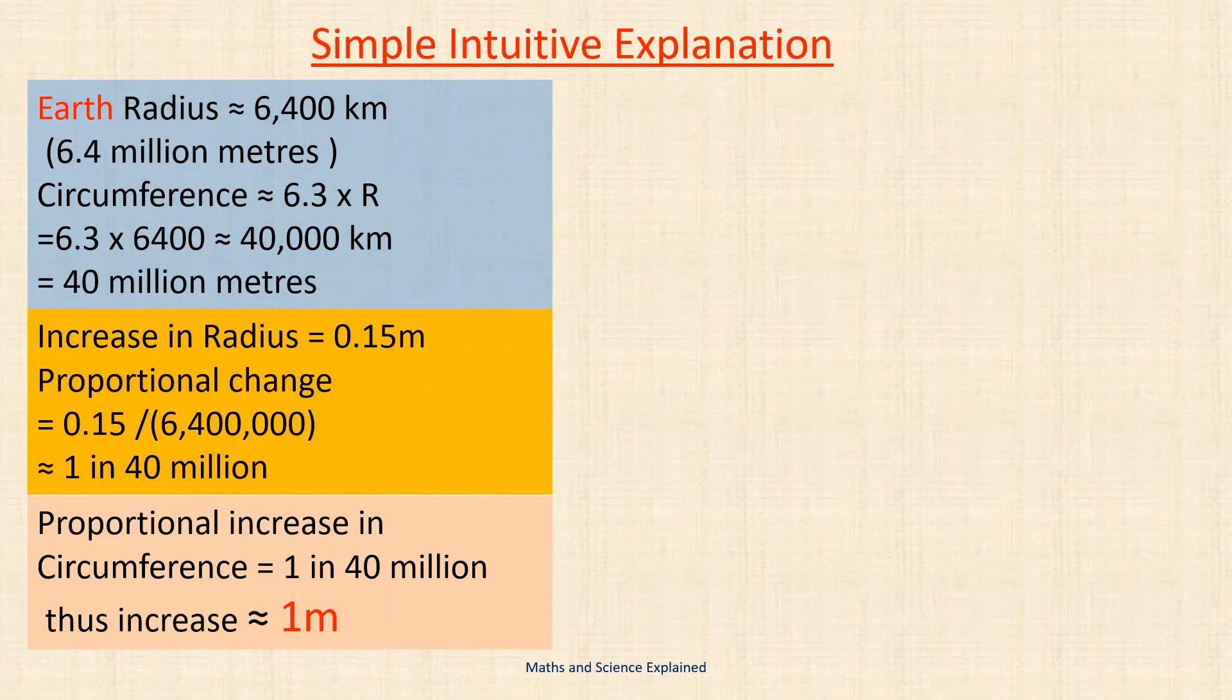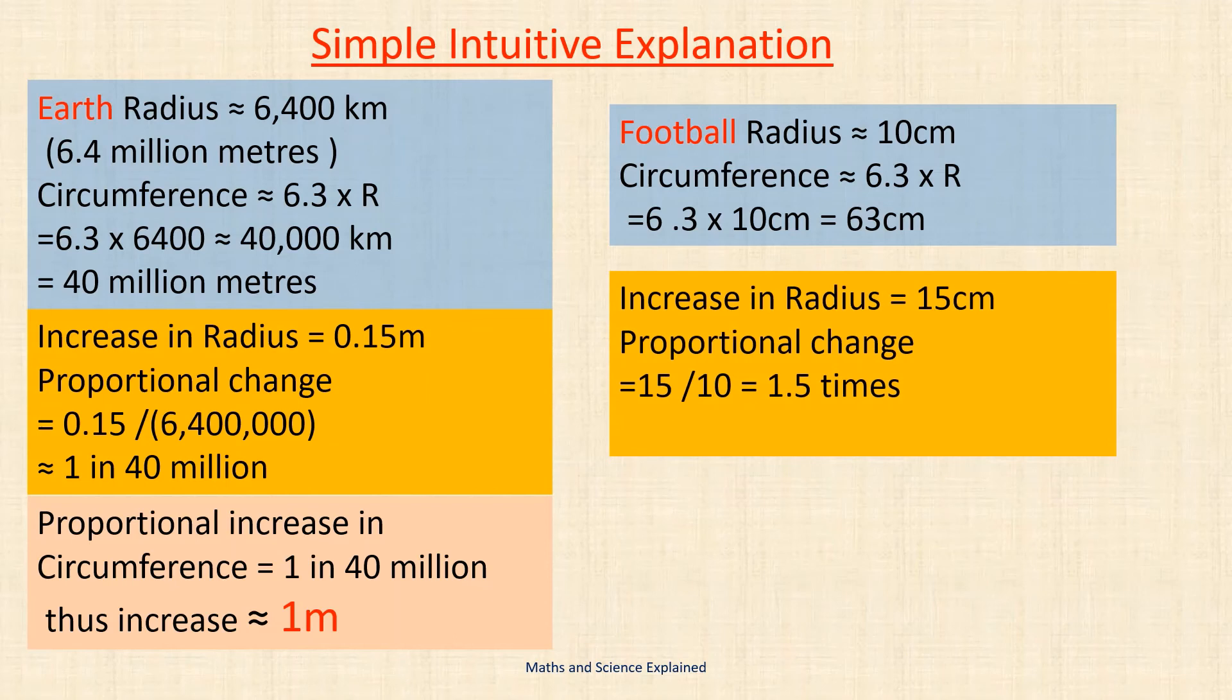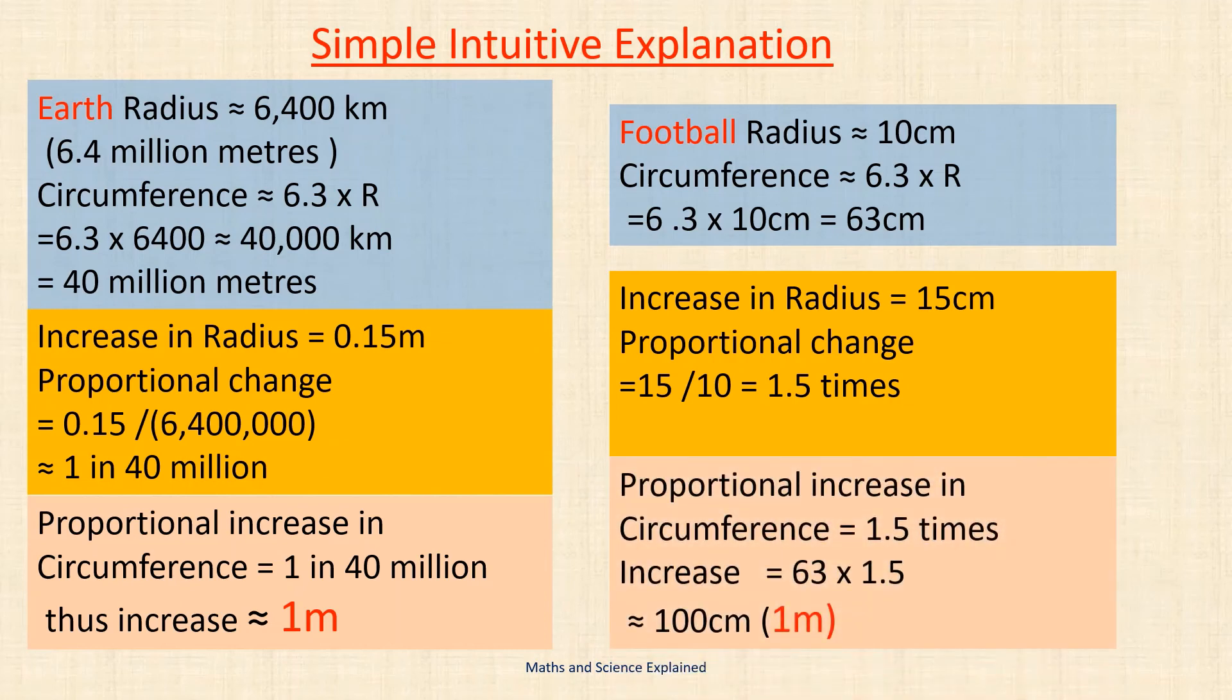Now compare this to a string wrapped tightly around a football with a radius of 10 centimeters. Again the circumference is 6.3 times the radius or 63 centimeters. Now the height increase of the string is the same 15 centimeters as the earth example and this is the same as the increase in the radius of the original string. The proportional change is 15 over 10 which is 1.5 times and this is the same as the proportional increase in the circumference. Thus the increase in circumference is 63 centimeters times 1.5 which is approximately 100 centimeters or 1 meter.